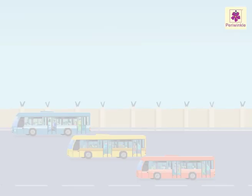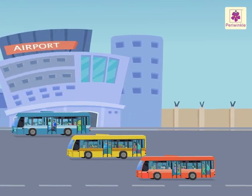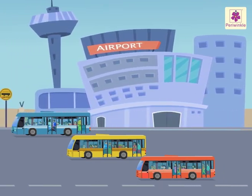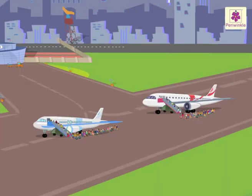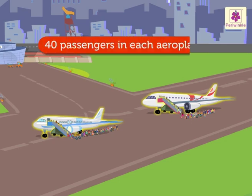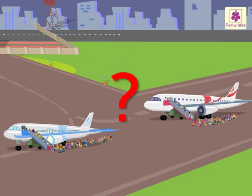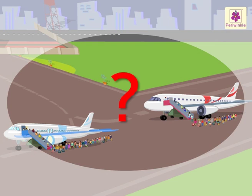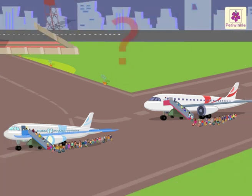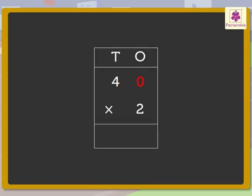Yippee, I am so excited! We have to reach our final destination by an aeroplane. There are two aeroplanes — each aeroplane carries 40 passengers. How many passengers do the two aeroplanes carry in all?